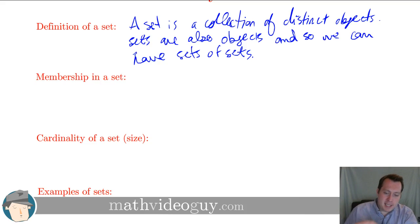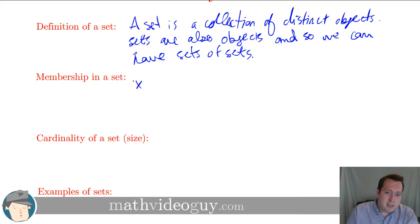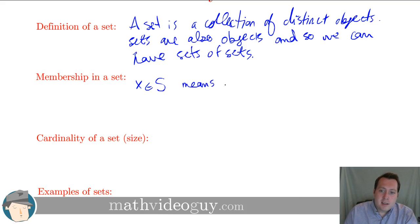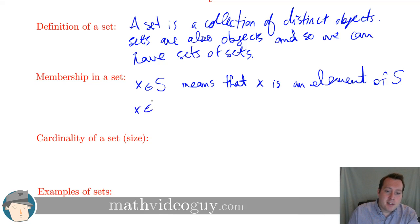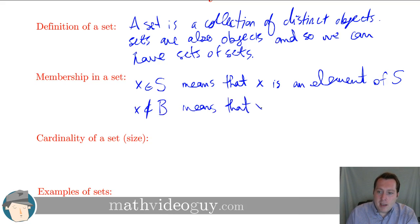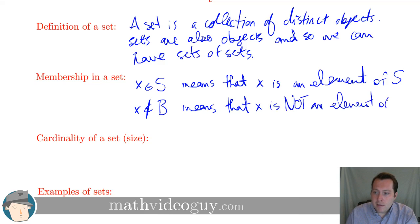For membership in a set, we use the following notation. If x is some object and s is a set, then 'x ∈ s' means that x is an element of the set s. We can also write 'x ∉ b' to mean that x is not an element of the set b.